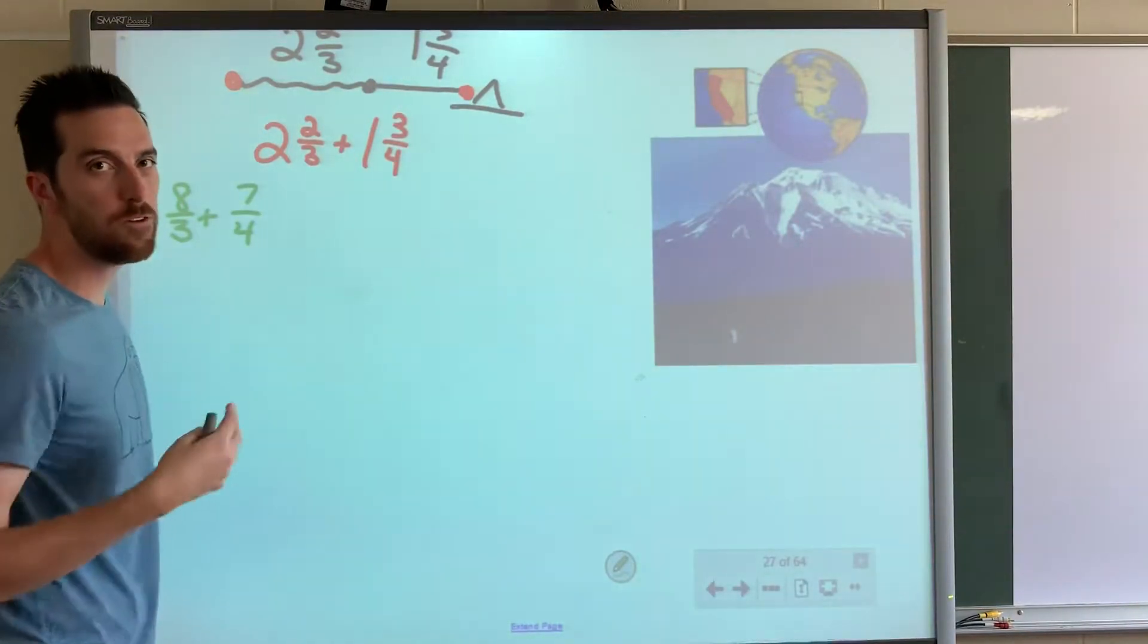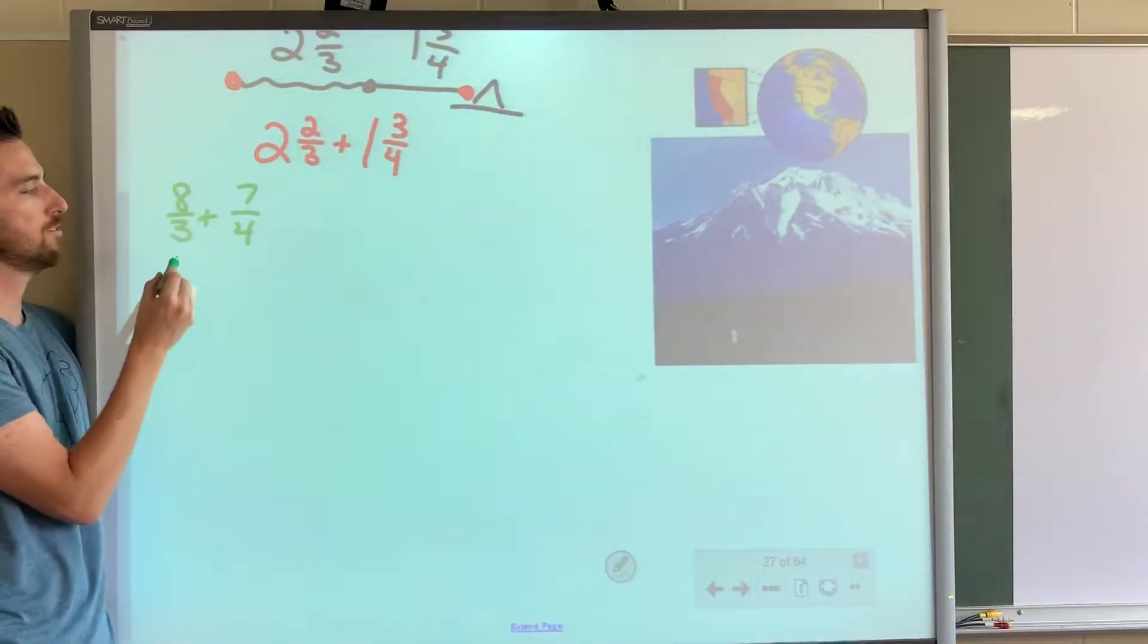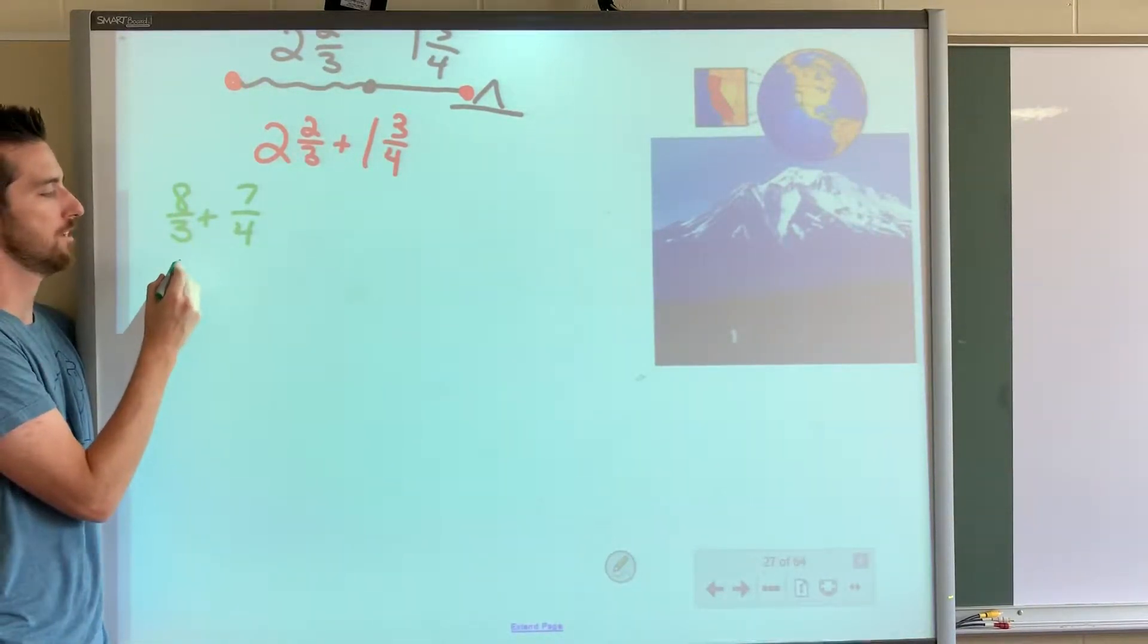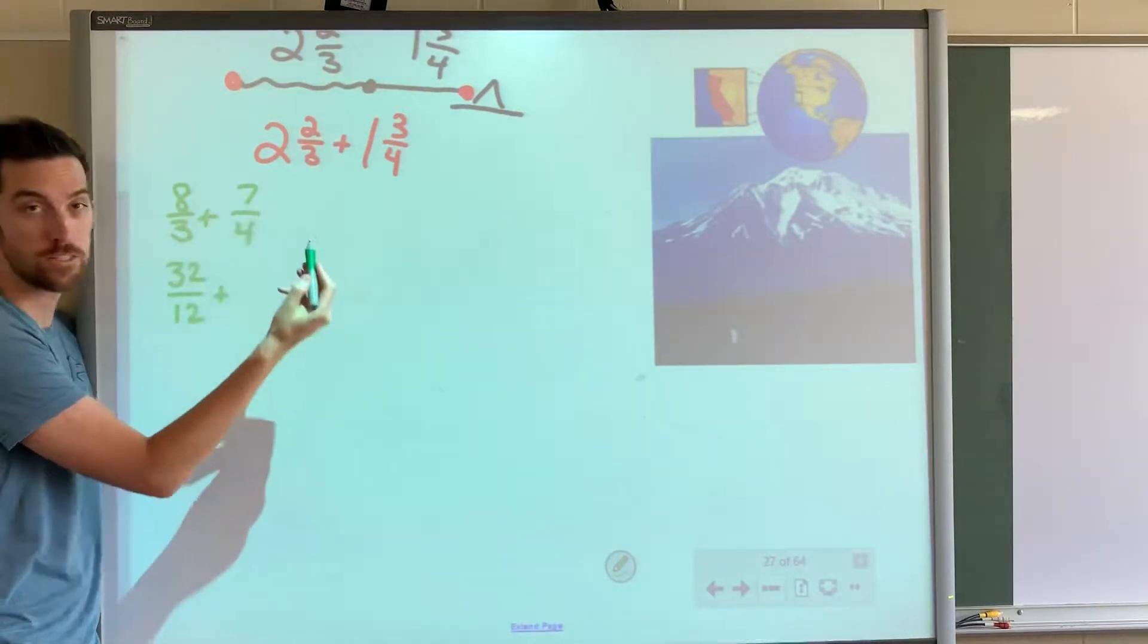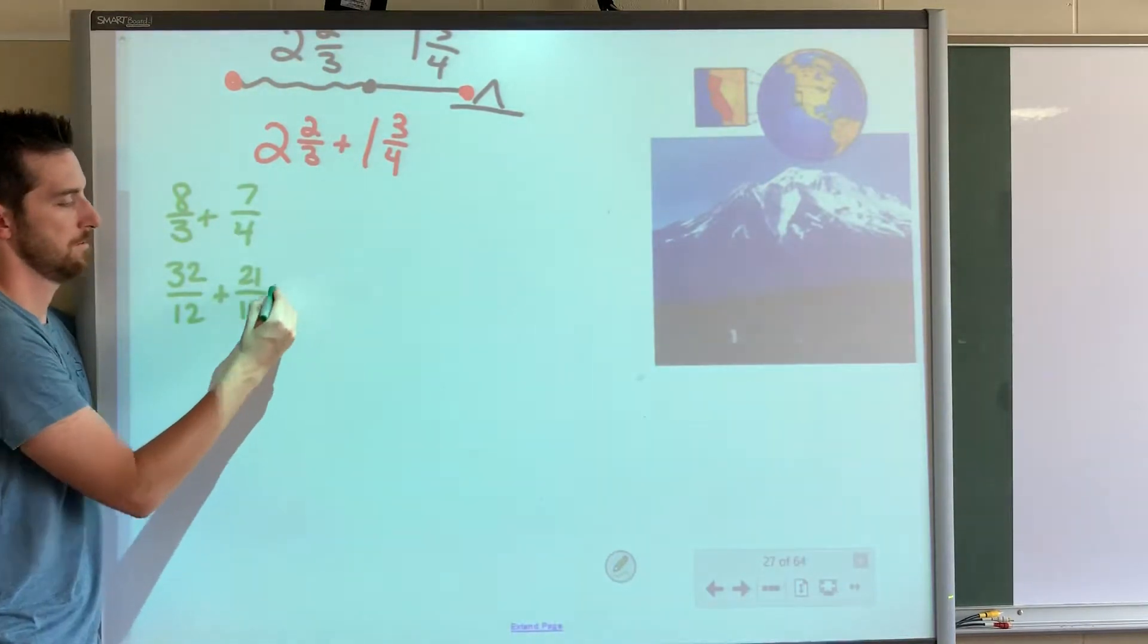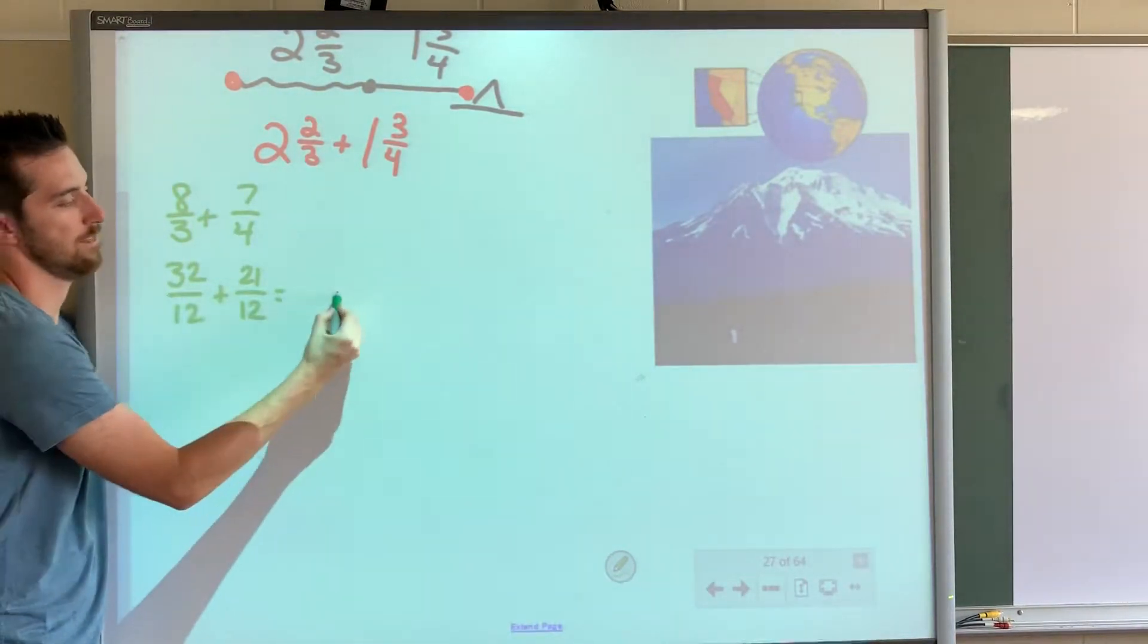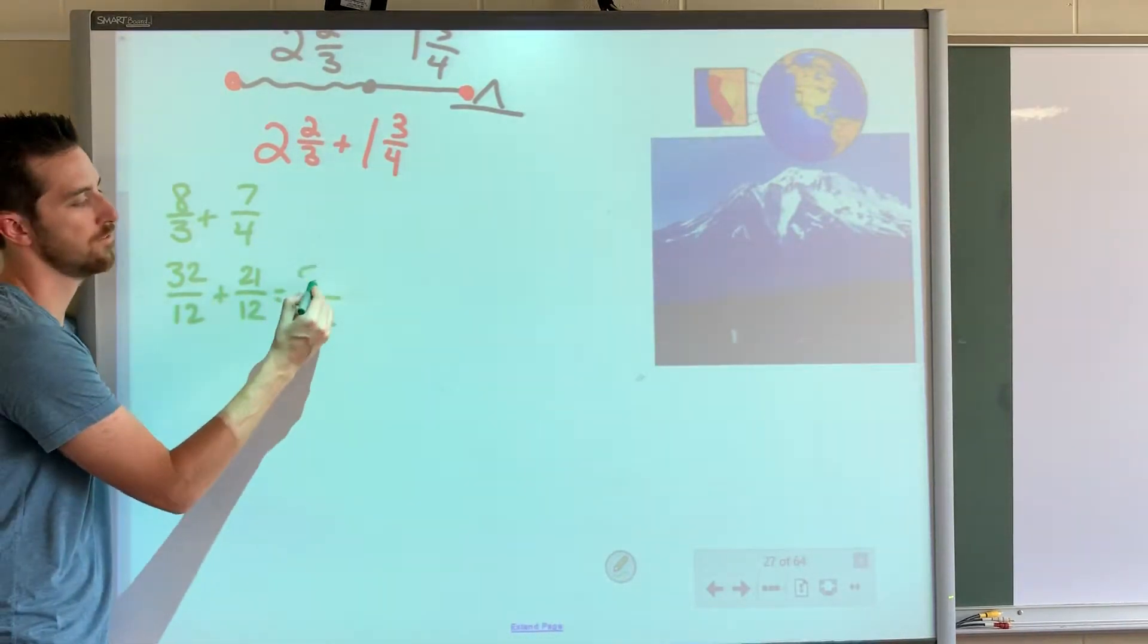And then we can say, oh they're both, they go into 12. So three times four gives you 12. So eight times four is 32-twelfths. Four times three is 12. So seven times three is 21. And then we can add them together. 32 plus 21 is 53-twelfths.